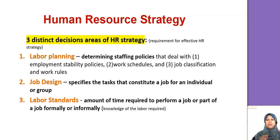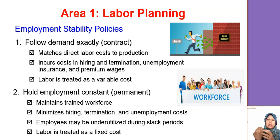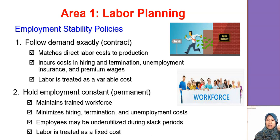Labor planning is the most basic area — it involves determining staff policy, which means deciding what employment policy the organization will adopt. The first type is 'follow demand exactly,' where hiring is contract-based. If there is high volume for the coming six months, they hire more and match labor cost directly with production volume. This means labor is treated as a variable cost, and there are costs involved in hiring and termination.